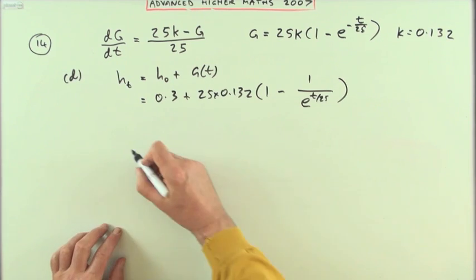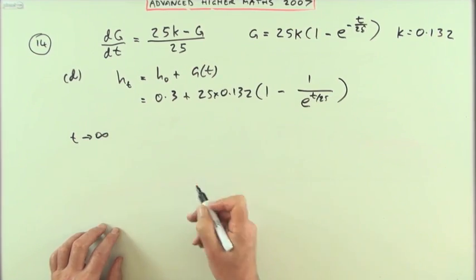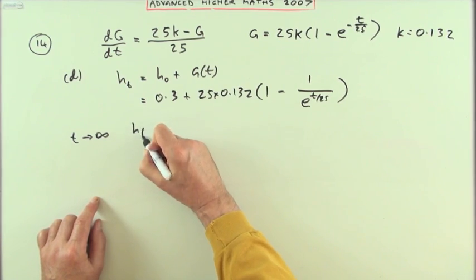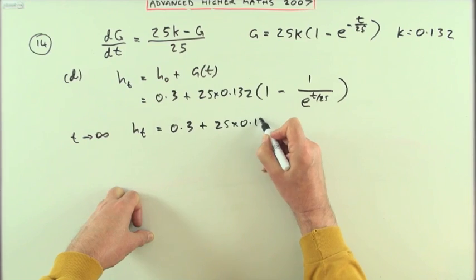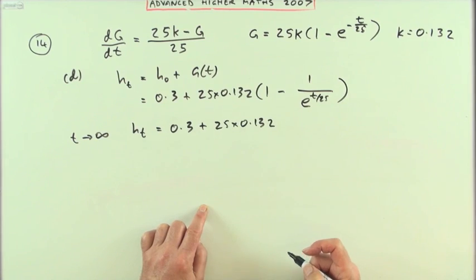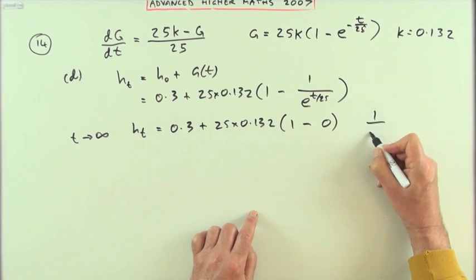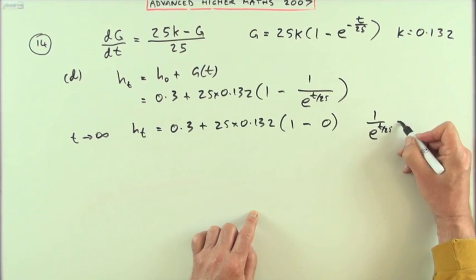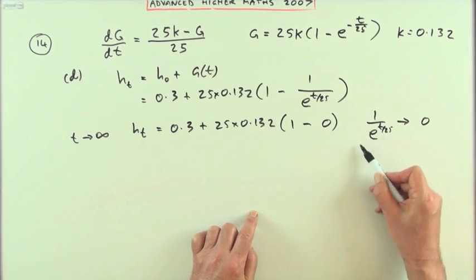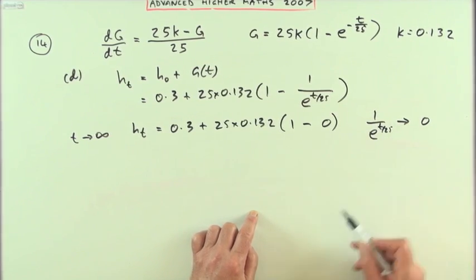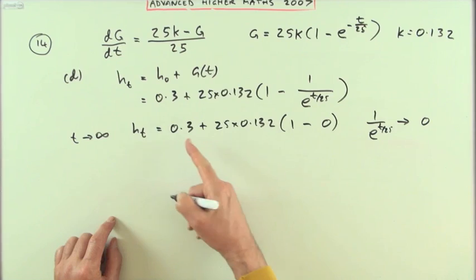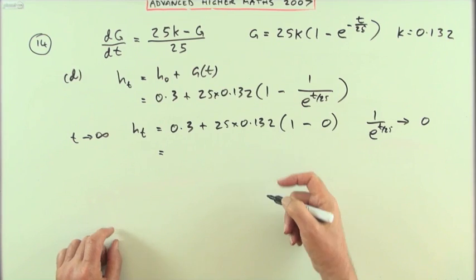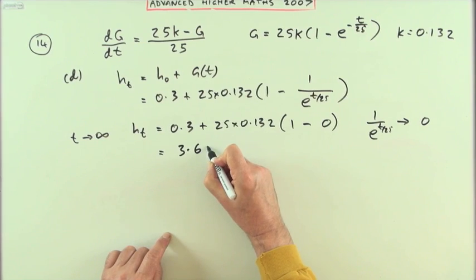What's the long term? Well the long term means as t tends to infinity, or at least becomes very big. So what would happen in the long term as t tended to infinity? Well you would have 0.3 still, you would have this factor still, which I've still not worked out separately, but this part here would disappear. This part would go 1 take away 0, because as t goes to infinity, 1 over e^(t/25) would tend to 0, because it's 1 over a number that becomes increasingly larger, so that fraction would eventually disappear. Which means the long term position for this plant, depending on how rapidly it approaches this limit, would just be this part. So putting that into a calculator gives you 3.6 metres.